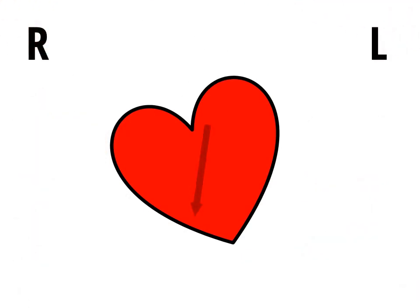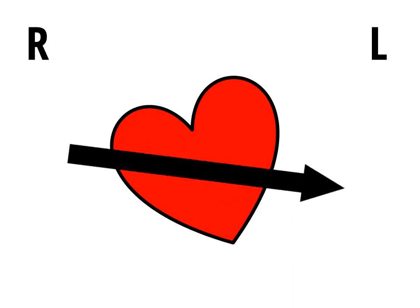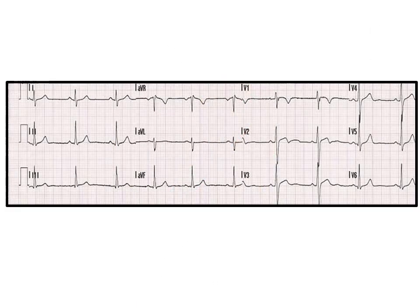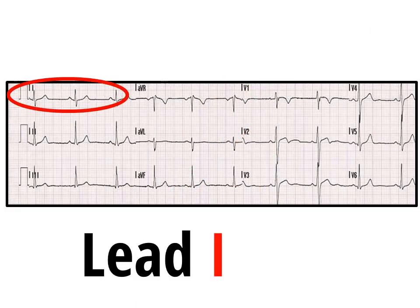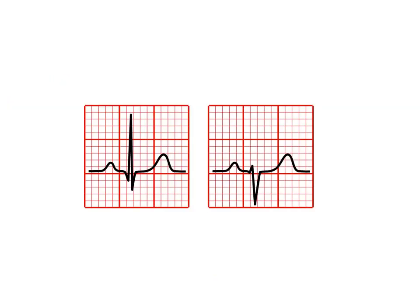The cardiac axis is the overall direction of ventricular depolarisation. Sometimes the axis is normal, too far to the left, or too far to the right. You can work it out really simply by finding leads 1 and 2 and deciding if these leads are positive or negative.